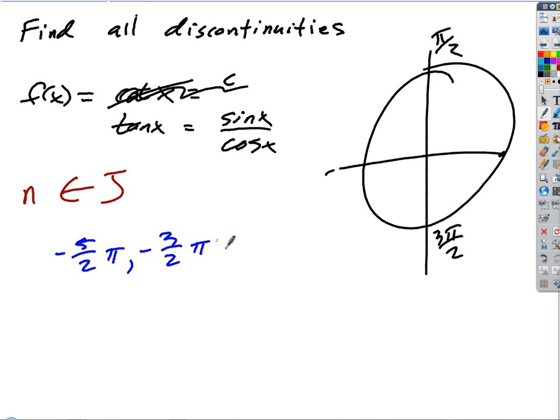Negative five halves pi, negative three halves pi, and negative one half pi. Pi over two, three pi over two, et cetera. What do those all look like?